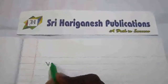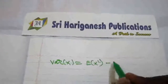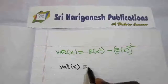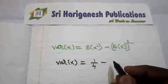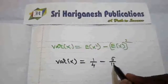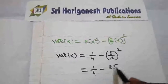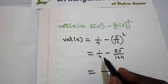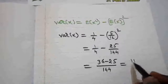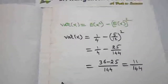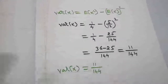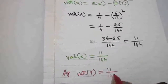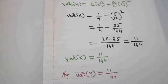Now finding variance of x: Var(x) = E(x²) minus [E(x)]² = 1/4 minus (5/12)² = 1/4 minus 25/144. Taking LCM 144: (36 minus 25)/144 = 11/144. So variance of x = 11/144. Similarly, variance of y = 11/144.